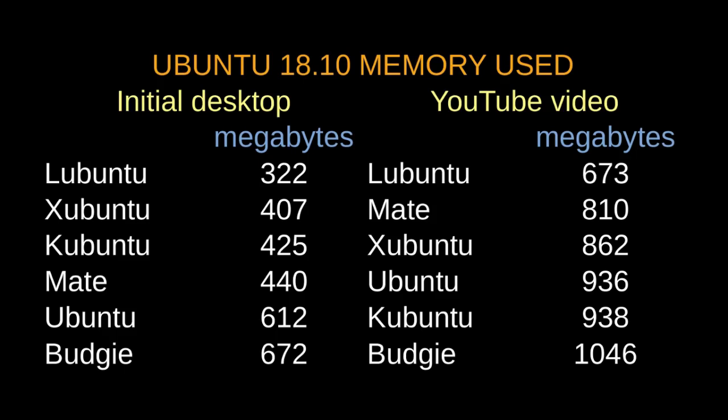With the YouTube video playing, Lubuntu comes in lowest at 673 megabytes, Mate comes in second at 810 megabytes, Xubuntu comes in fourth at 936 megabytes, Kubuntu comes in fifth at 938 megabytes, and Budgie comes in sixth at 1046 megabytes.